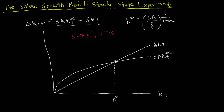To see how we get there: the depreciation line is unaffected by the savings rate, but the investment curve shifts upward to S'·A·k_t^α. Our new steady state K** is where this new investment curve intersects the depreciation line, and K** is clearly greater than the old steady state K*.